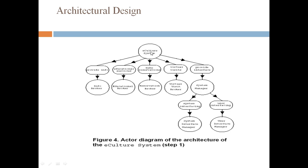And this is the architectural design. This actor diagram of the architecture of the e-culture system. We have e-culture system to provide info, educational services. This provide info needs an info broker. For virtual visits it needs a virtual visit broker. For system manager it needs system interfacing. That means you need to have a system interface manager. So this is the architectural design.